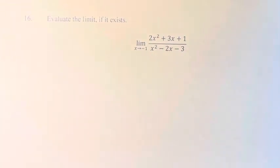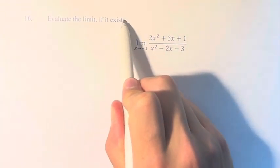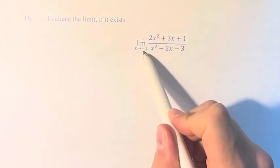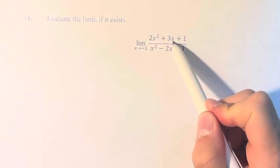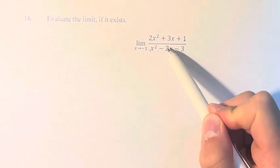Hello and welcome back to another video. In this problem, we're asked to evaluate the limit if it exists, where we have the limit as x approaches negative 1 of 2x squared plus 3x plus 1 over x squared minus 2x minus 3.